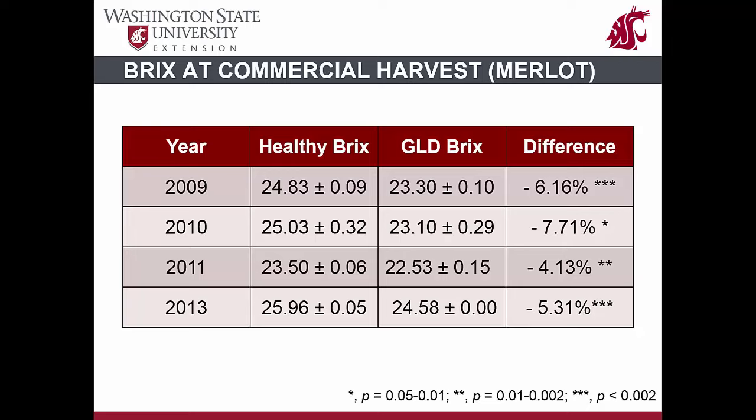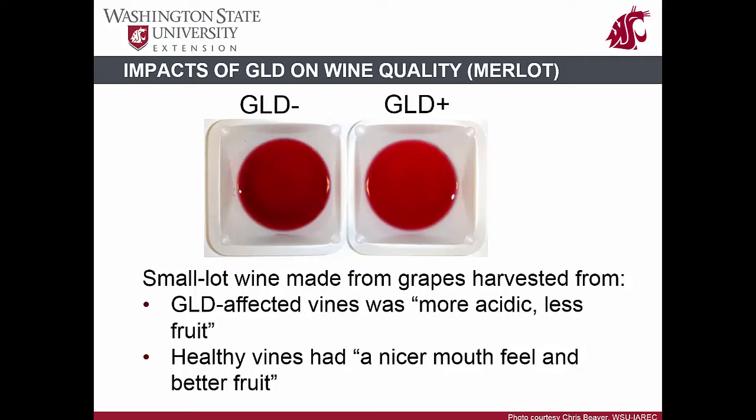This table shows impacts of grapevine leaf roll disease on sugar content of grapes as measured by Brix during four seasons. Grapes from virus-infected Merlot vines have significantly less sugar compared to berries from healthy vines — sugars can be reduced between 4 to 8% due to leaf roll infection. Since berry quality is affected, wine quality is also impacted. Wine from grapes with leaf roll disease has less color, appears more acidic, is less fruity, and has significantly less anthocyanin pigments and alcohol content, thereby affecting overall wine quality.